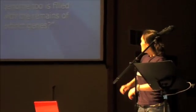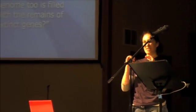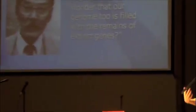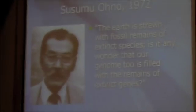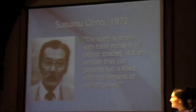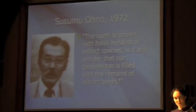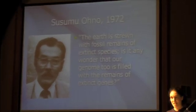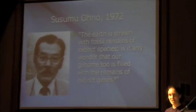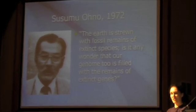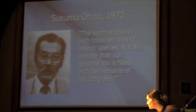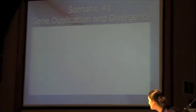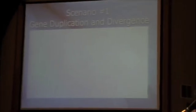So Susumu thought of this really cool idea, which has actually become a staple of basic genetics. Since the fossil record was scattered with all these fossil remains of extinct species, maybe our genomes accumulate all these fossils of extinct genes. And so what he did was come up with the idea of gene duplication and divergence and pseudogenes.